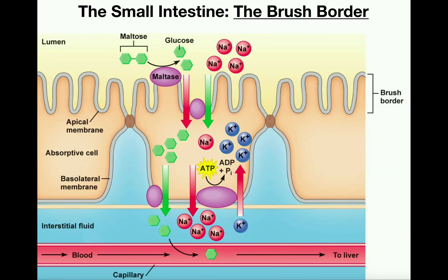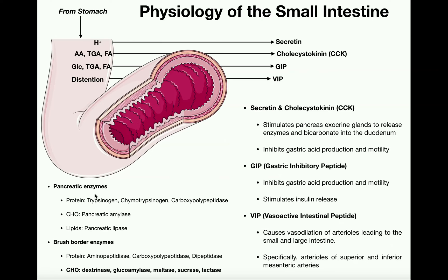When we talk about pancreatic enzymes, these are not naturally present in the small intestine — if you hadn't eaten a meal, you would never find these enzymes there. Instead, they have to be secreted in response to hormones, specifically secretin and cholecystokinin. Whenever chyme enters the stomach, it triggers the pancreas to release enzymes into the duodenum from its exocrine glands. The pancreas is both an endocrine and an exocrine organ, and in terms of its exocrine functions, it squirts these enzymes into the duodenum to help digest nutrients.